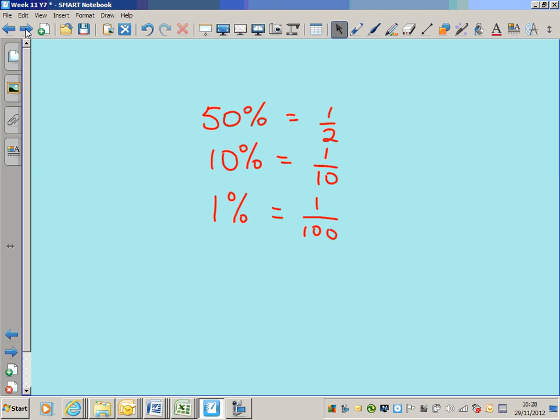We agreed that 50% was the same as 1 half, and to find 1 half of something, we divide by 2. We agreed that 10% was the same as 1 tenth, and to find 1 tenth of something, you simply divide by 10. And we agreed that 1% was the same as 1 hundredth, 1 out of 100, and to find 1 hundredth of something, we divide by 100.